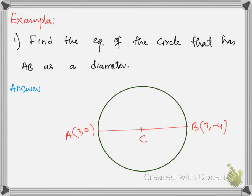In this lecture I will solve a few important questions regarding circles. Number 1: find the equation of the circle that has AB as a diameter. Now this is very important — since AB is a diameter, therefore the midpoint of AB, which is the point C, will be the center of the circle.